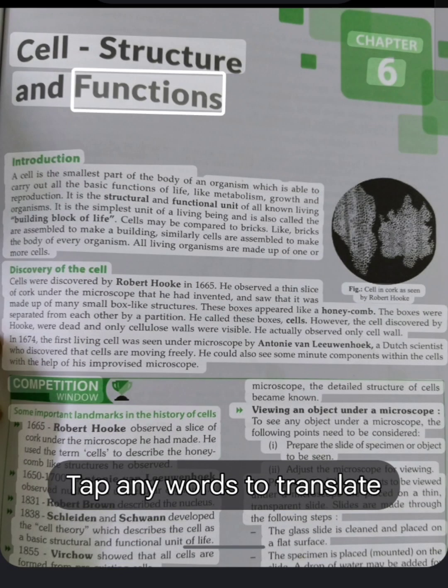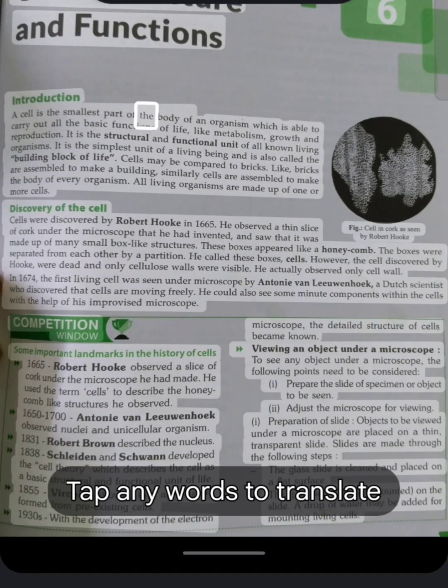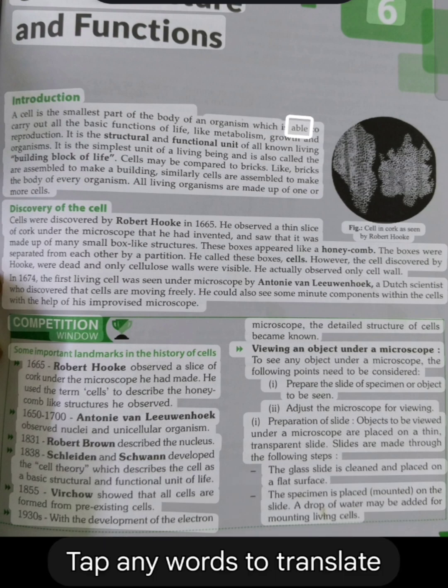Cell, Structure and Functions, Chapter 6. Introduction: A cell is the smallest part of the body of an organism which is able to carry out all the basic functions of life, like metabolism, growth and reproduction. It is the structural and functional unit of all known living organisms.